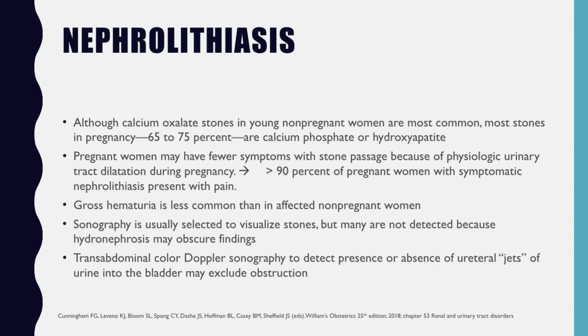Next we discuss nephrolithiasis. Although calcium oxalate stones in young non-pregnant women are most common, most stones in pregnancy — 65 to 75% — are calcium phosphate or hydroxyapatite. Pregnant women may have fewer symptoms with stone passage because of physiologic urinary tract dilatation during pregnancy. More than 90% of pregnant women with symptomatic nephrolithiasis present with pain; gross hematuria is less common than in non-pregnant women. Sonography is usually selected to visualize the stones, but many are not detected because of hydronephrosis that may obscure findings. Transabdominal color Doppler sonography can detect the presence or absence of ureteral jets of urine into the bladder, which may exclude obstruction.